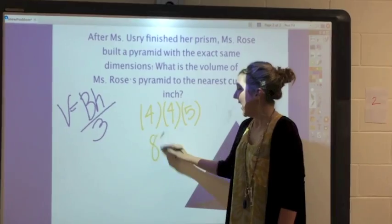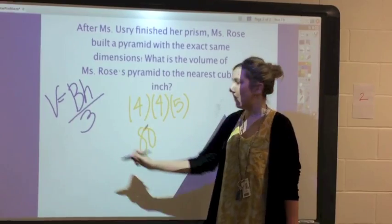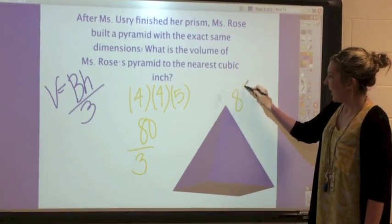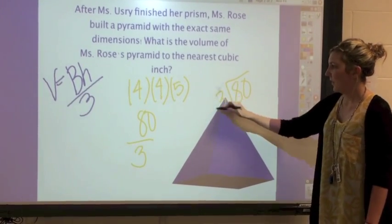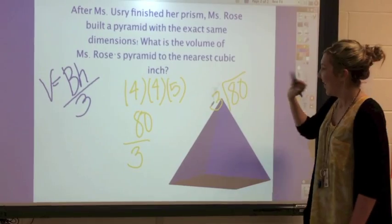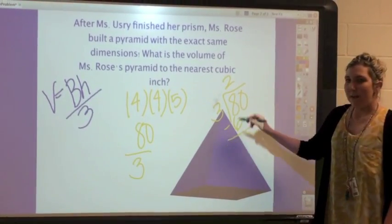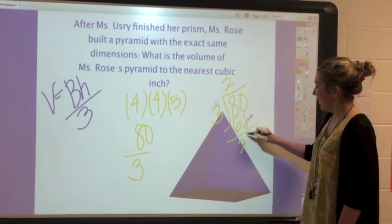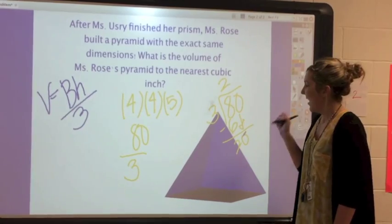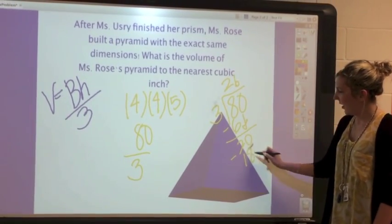And this is where we have to remember for the pyramid, we divide by three. So we're going to divide eighty by three. Three can go into eight how many times? That's right, two. Eight minus six is two, and then we bring down our zero. Three can go into twenty how many times? Six. And we get another two.